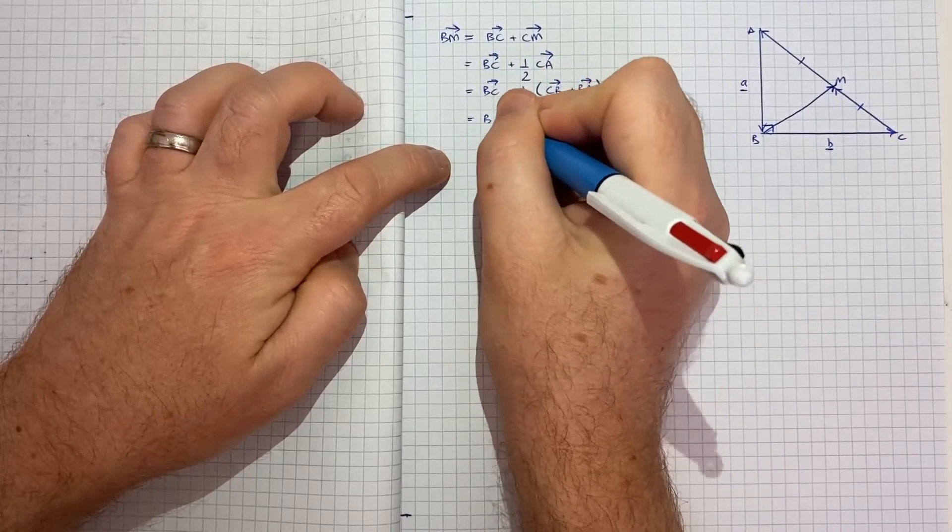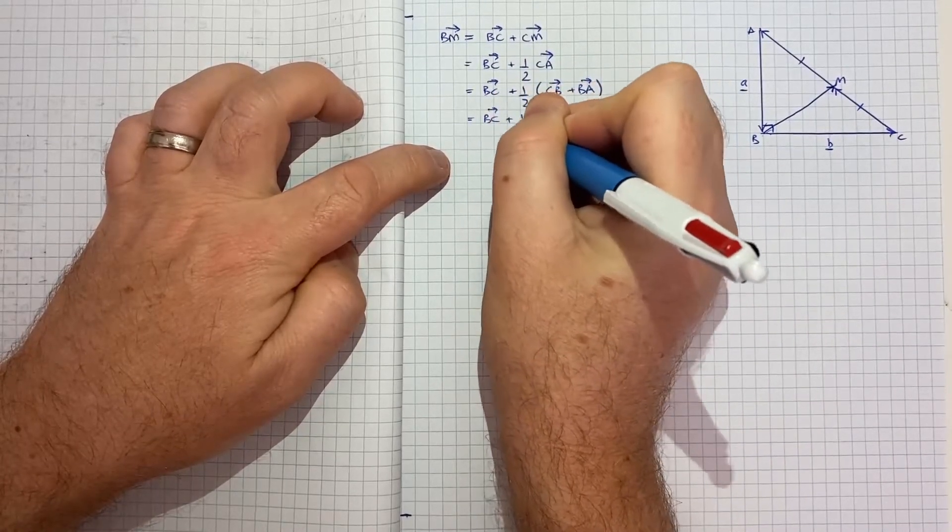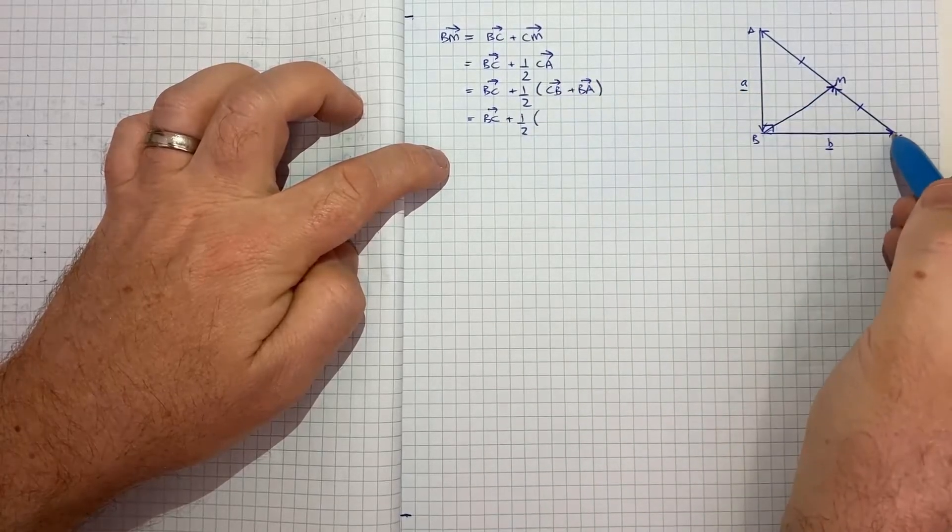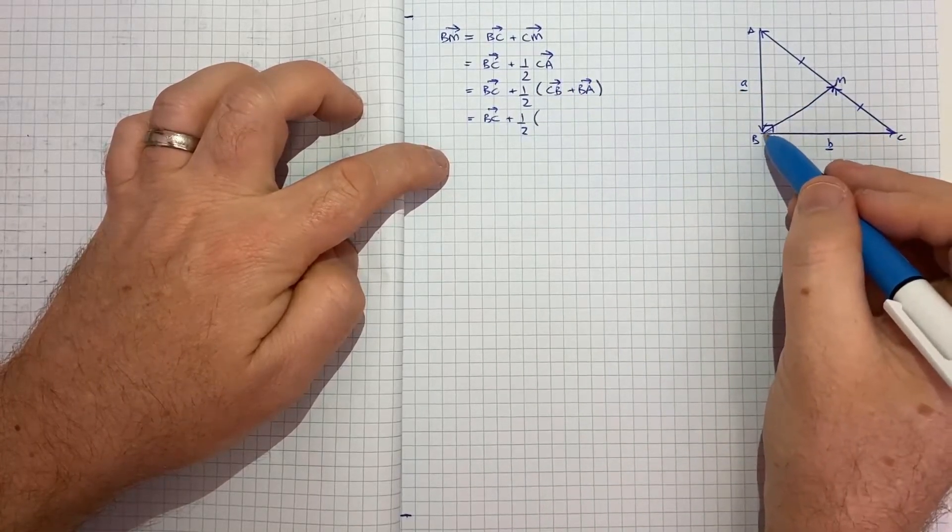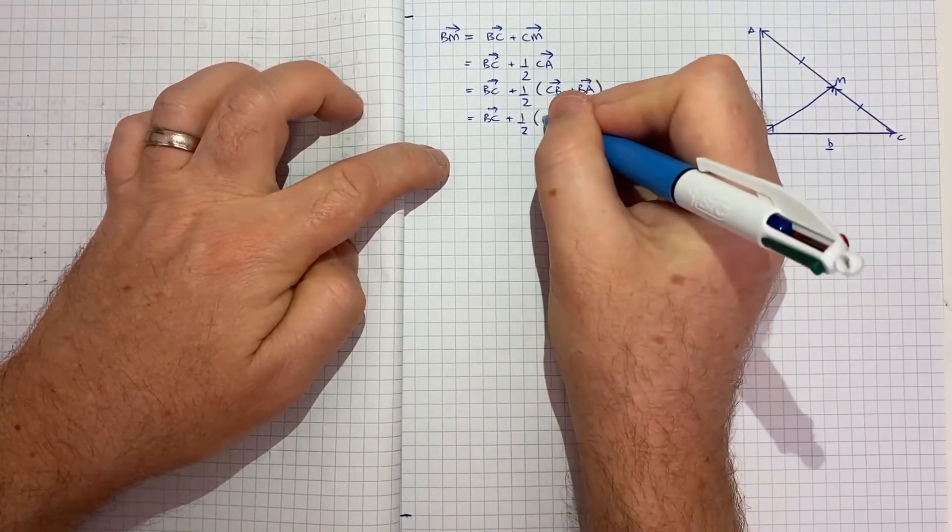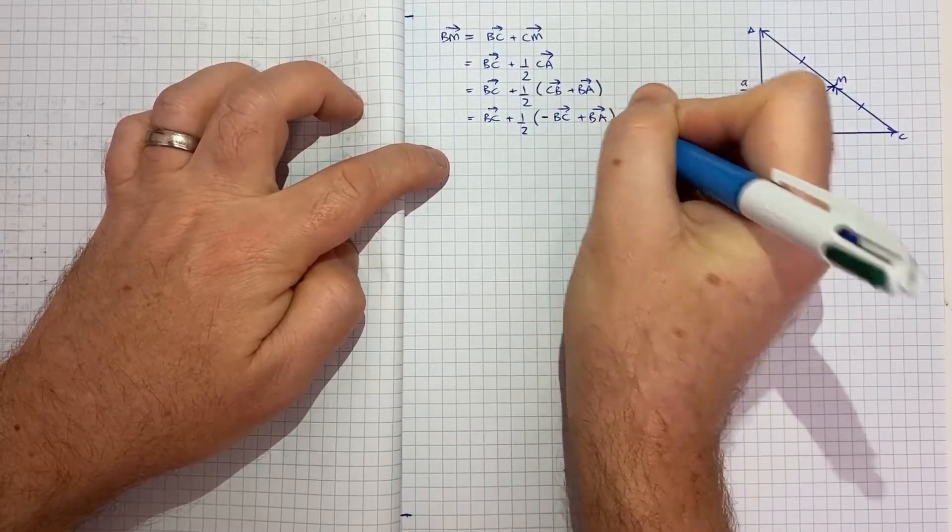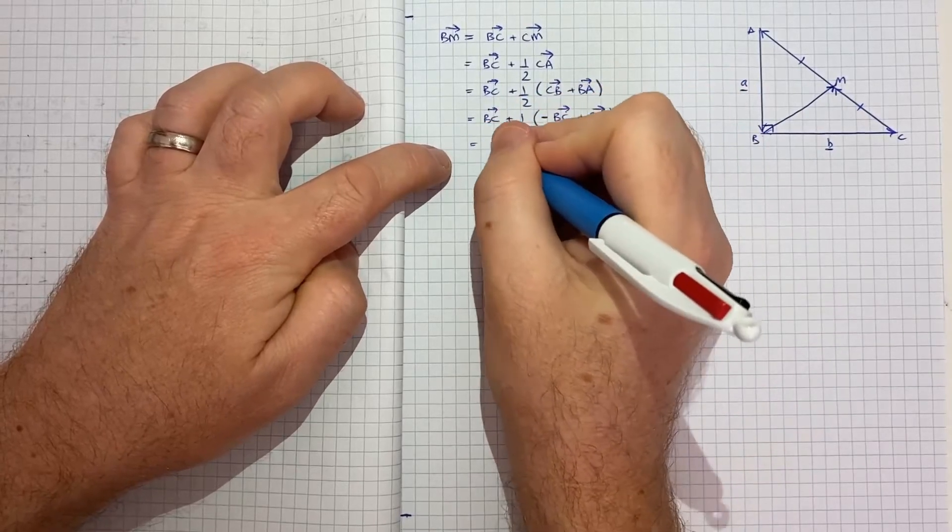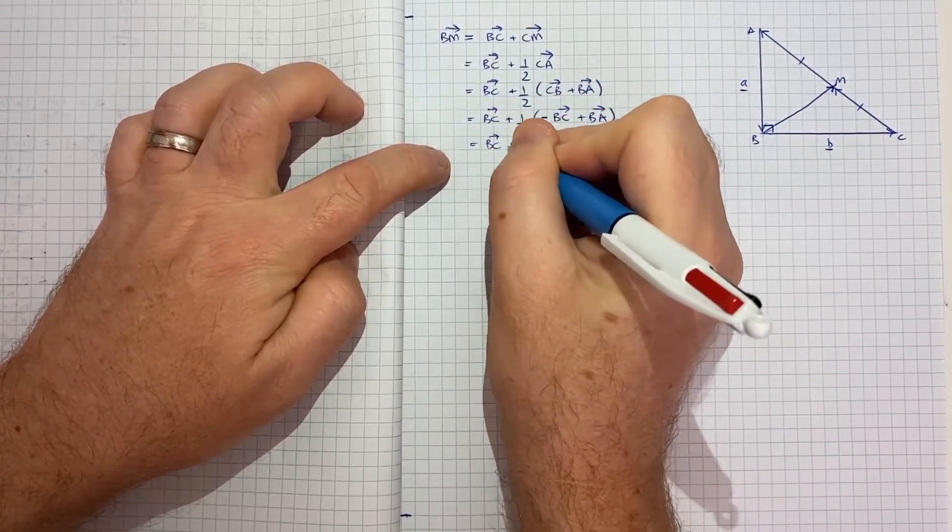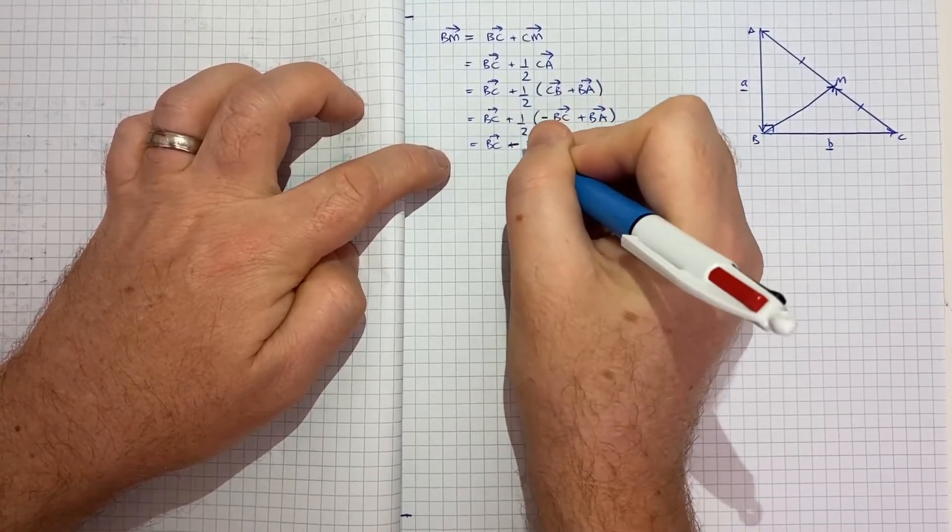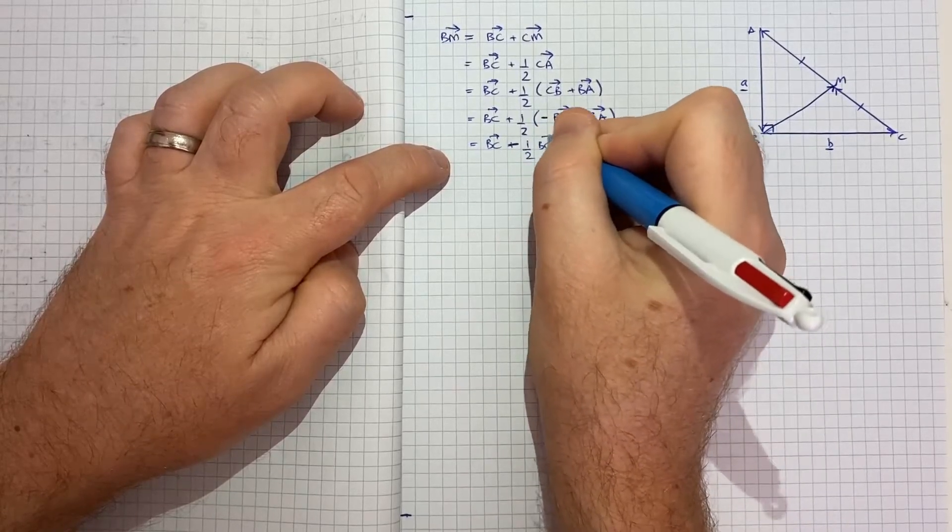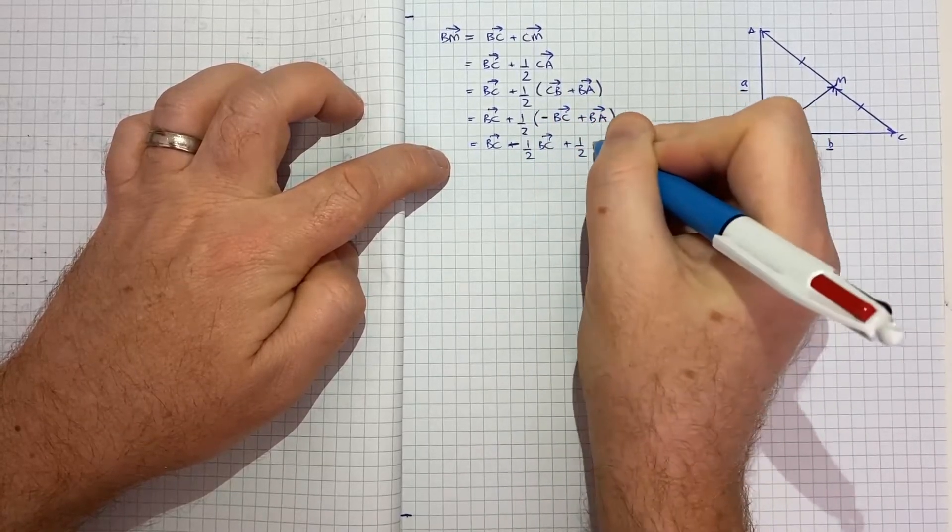Now if we think about the vector c to a, we can get there by going c to b and then b to a. So we can rewrite this as b c plus a half, and then go c to b, and then go b to a. And that's equal to b c plus a half. Now going from c to b is the same as going from b to c, but in the opposite direction. So that's negative b to c, plus b a.